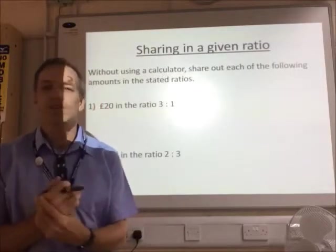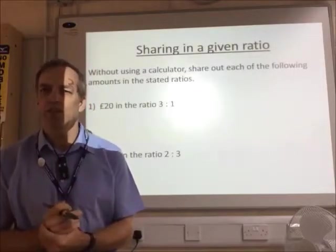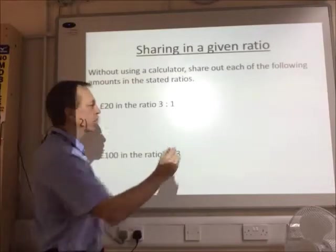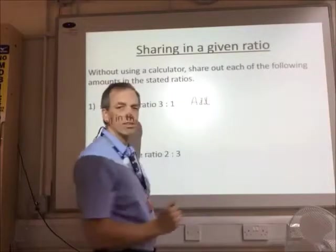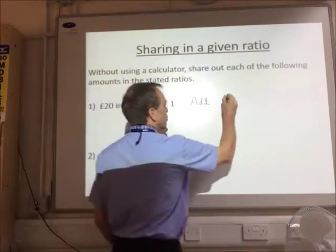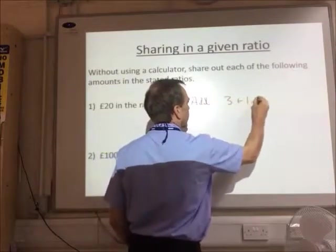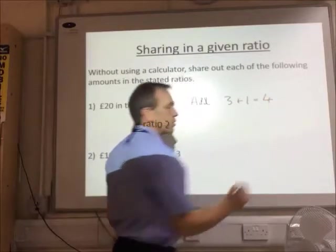So the first question on your cards is £20 in the ratio 3 to 1. So the first thing we're going to do is to add the ratios. So 3 plus 1 equals 4.